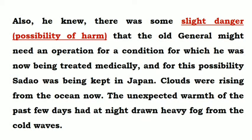There was also a second reason Sadao was not sent abroad: there was a slight danger that the old Japanese general might need an operation for a condition for which he was currently being treated medically, and for this possibility Sadao was being kept in Japan. So there were two reasons Sadao was not sent abroad with the troops — first, he was perfecting a discovery; second, the old general might need an operation at any time.